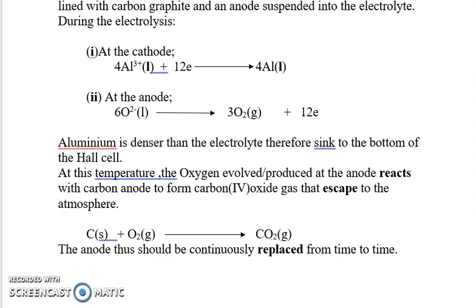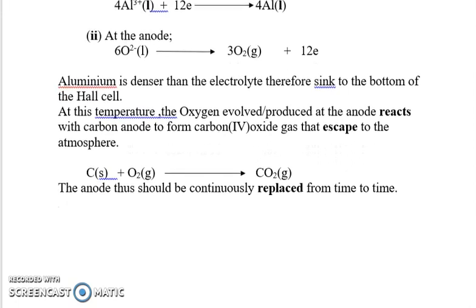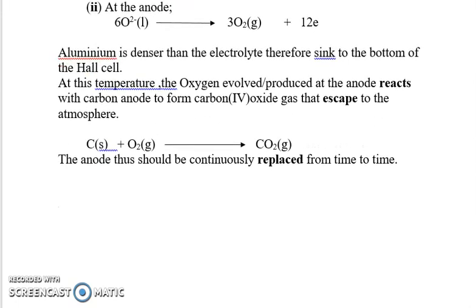At this temperature, the oxygen evolved at the anode reacts with the carbon anode to form carbon dioxide gas, which escapes to the atmosphere. Remember, the anode is made up of carbon. The anode must be continuously replaced from time to time — this is another factor making this process expensive, as the anode is used up when oxygen reacts with it.